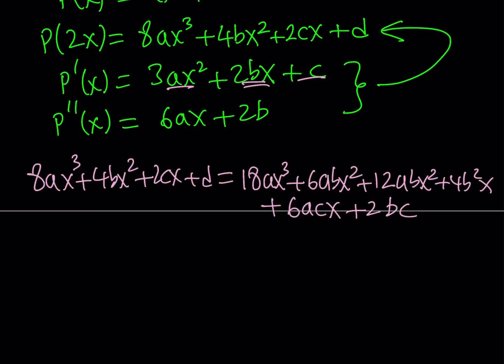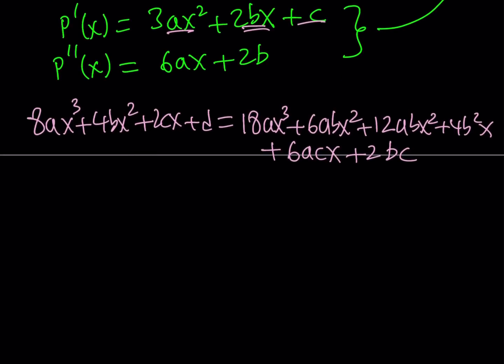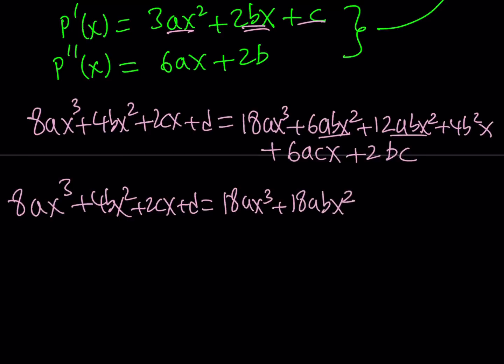From here we can get a lot of good identities, but let's simplify the right hand side. Combining like terms: 18a²x³ + 18abx² + (4b² + 6ac)x + 2bc.